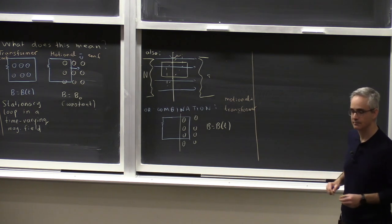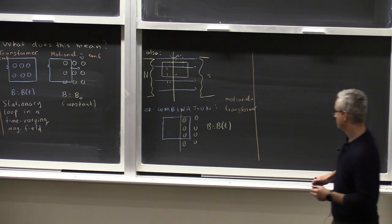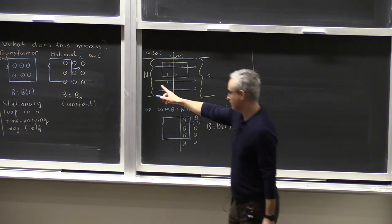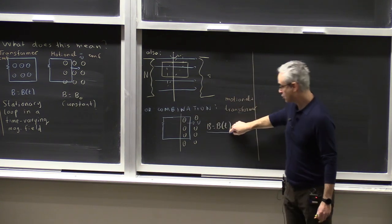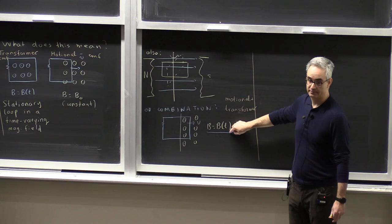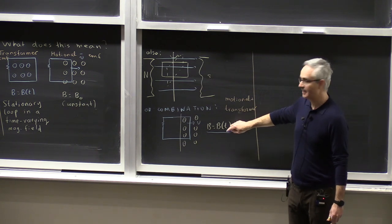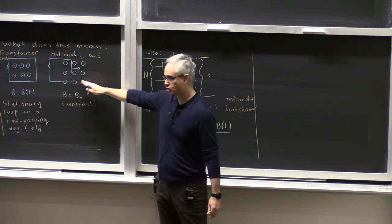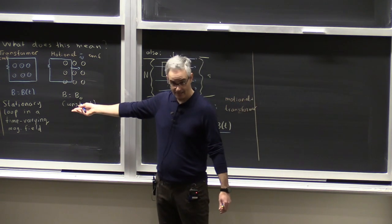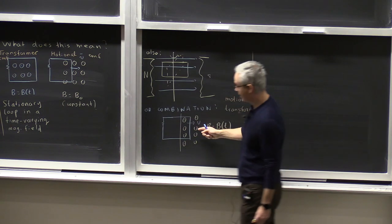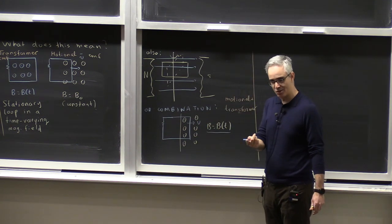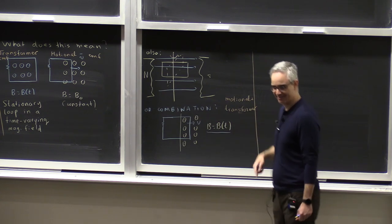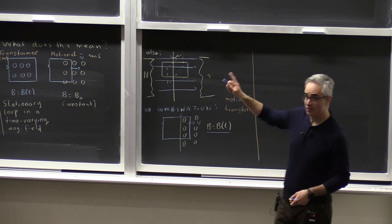Student question: I didn't understand the combination part. The answer: in the combination case you have both motion, but now the magnetic field also changes. The loop is moving into the magnetic field, so even if the magnetic field were constant the flux would change. But now the flux changes for two reasons — both because of the motion and because of the time rate of change in the magnetic field.